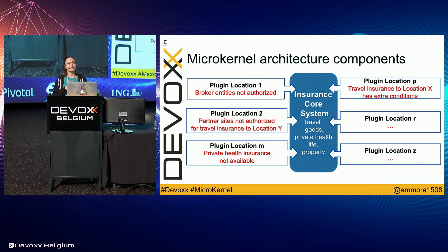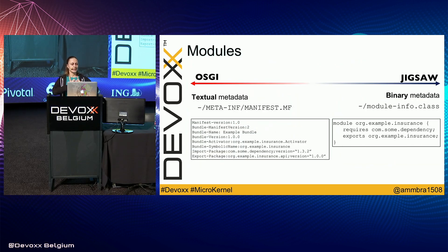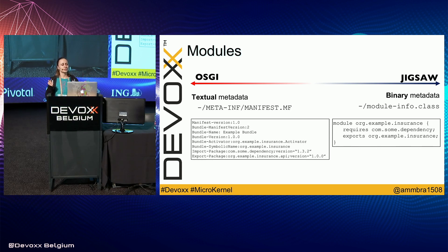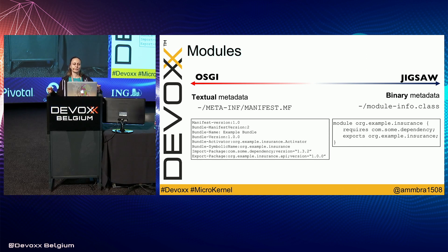Building the system as a microkernel allows developers to add support for new countries needed in the future or upgrade existing ones without affecting any other country already in place. We think of the system as a core holding most of the insurance functionality, with plug-ins for each location and hooks for those plug-ins. Plug-ins should be designed as self-contained and independently deployable. Speaking of modules, the first thing that comes to mind is OSGI, and of course Jigsaw — Java 9 Plus — which introduced modularity for all developers. Those two are going to be the subject of our talk today.